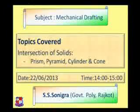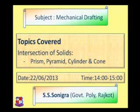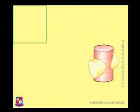When two solids intersect with each other, some line of intersection or curve of intersection would be there. The solids we will cover today in our discussion are prism, pyramid, cylinder, and cone.